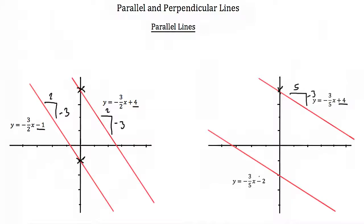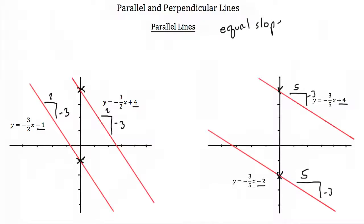In our second line, we have a y-intercept of negative 2 — it's right there. And again, our rise over run is negative 3 over 5. We know these parallel lines never cross — that's why they're parallel. We'll notice that our rise over run, or our change in x and change in y, are always the same. Which makes sense, because if they weren't the same, eventually the lines would cross. So it's important to notice that all parallel lines have equal slope, or the slopes of all parallel lines are the same.